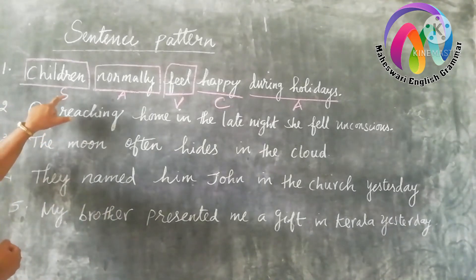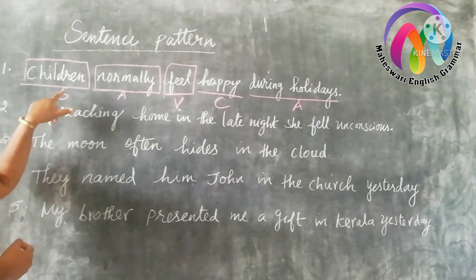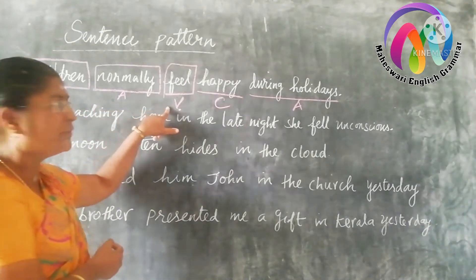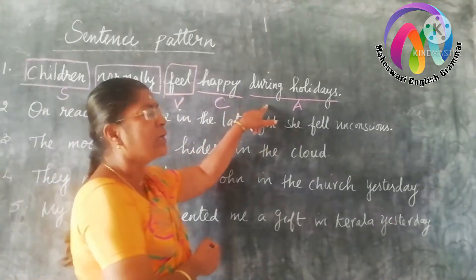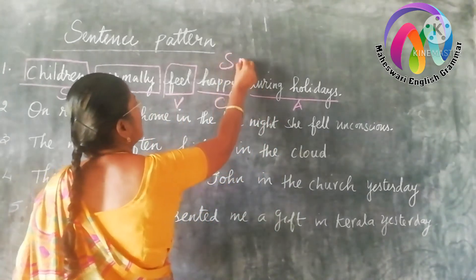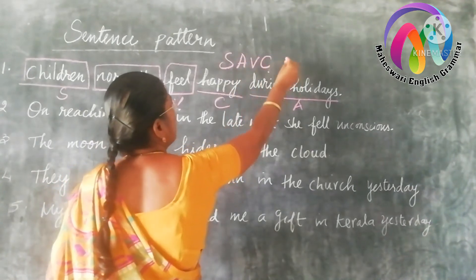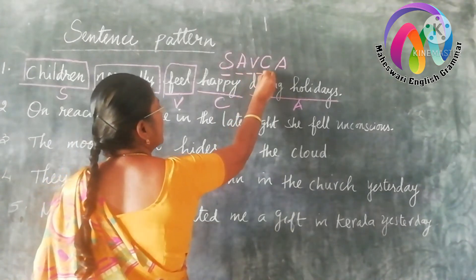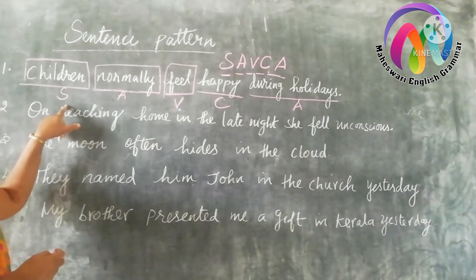So the sentence pattern is: S (subject), A (adverbial), V (verb), C (complement), A (adverbial). 'Children' is the subject, 'normally' is an adverbial, 'feel' is the verb, 'happy' is the complement, and 'during holidays' is an adverbial. So the sentence is in the pattern of S A V C A.